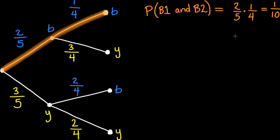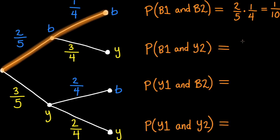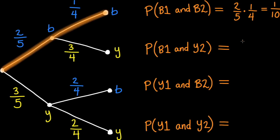Now you do it. Use the tree diagram to calculate the probabilities of the other possibilities: blue-yellow, yellow-blue, and yellow-yellow. The probabilities each work out to three-tenths. The four probabilities add up to a total of one, as they should.